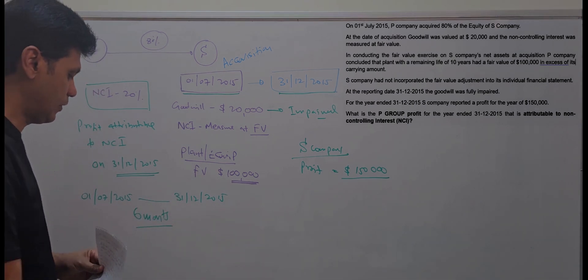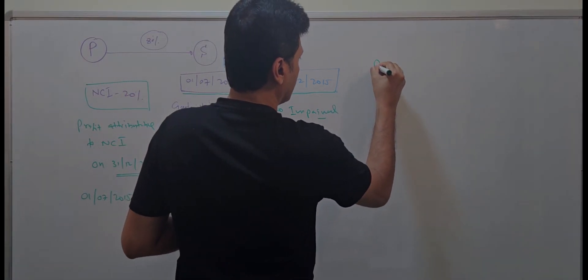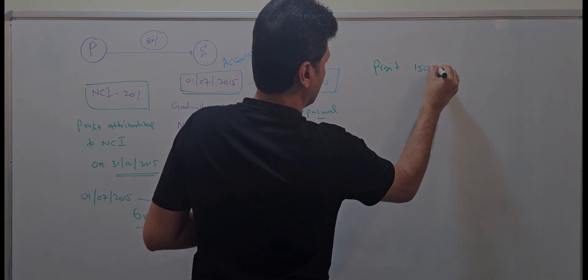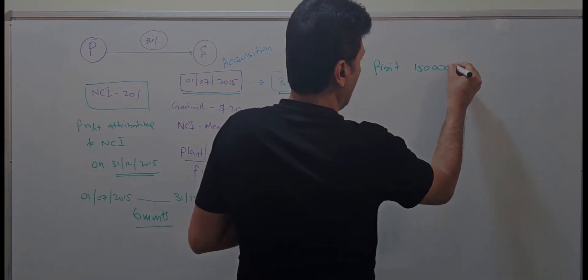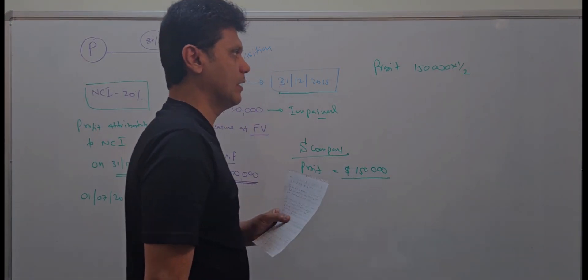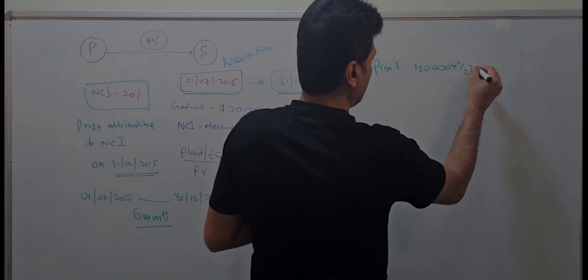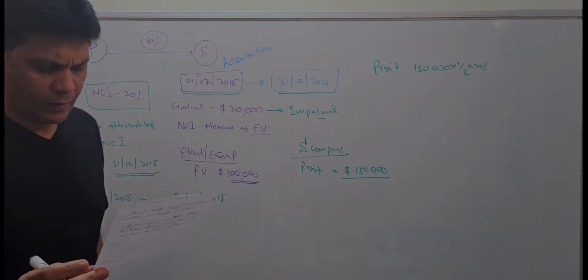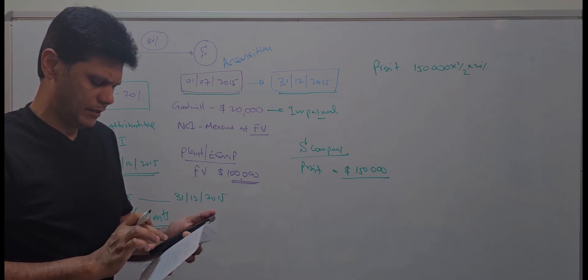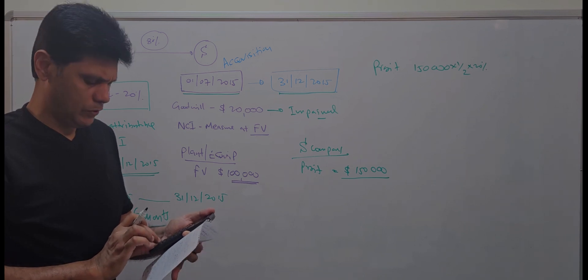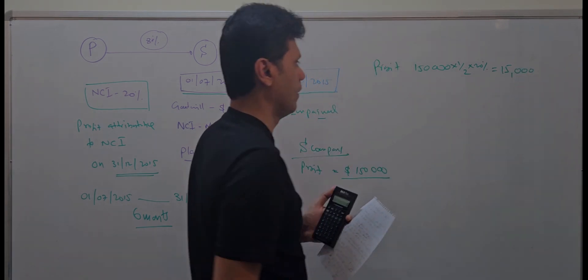To calculate the profit attributable to the non-controlling interest: the reported profit is 150,000 for the full year, so the half-year profit is 75,000. The NCI portion is 20%, so 150,000 divided by 2, times 20%, gives 15,000. This is the attributable profit to non-controlling interest before adjustments.